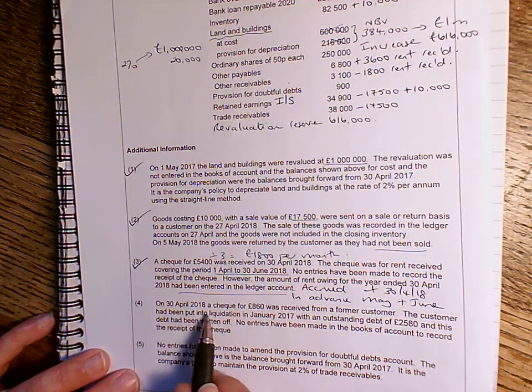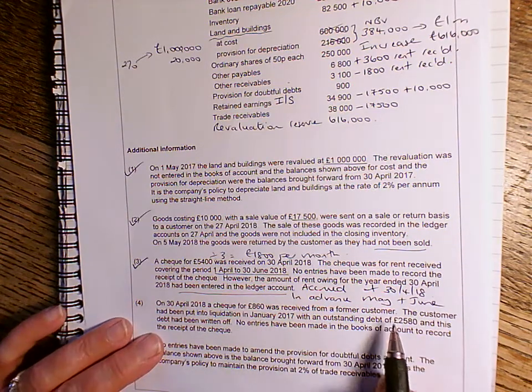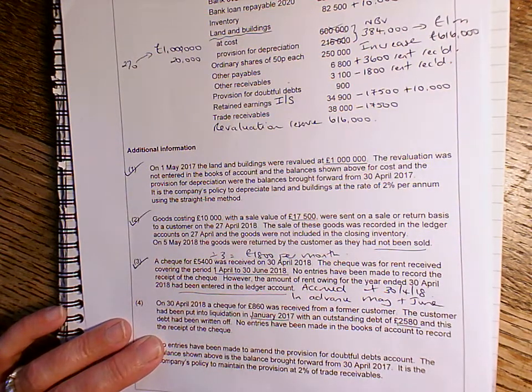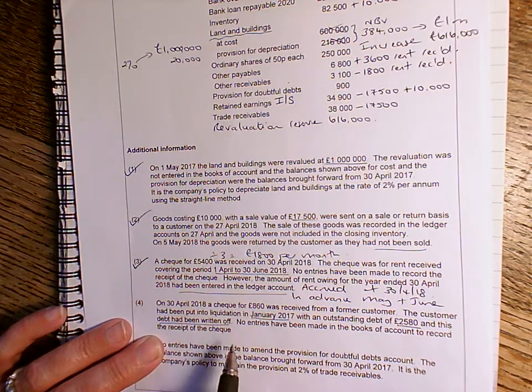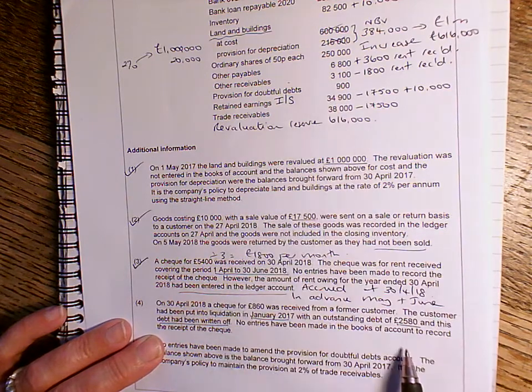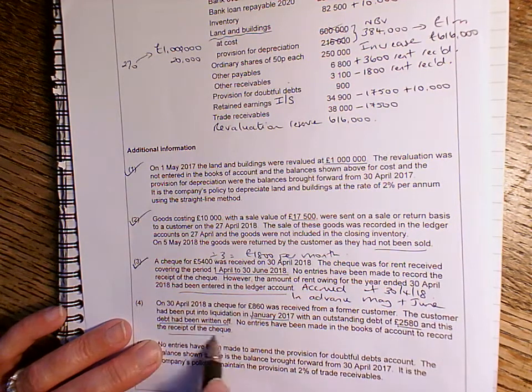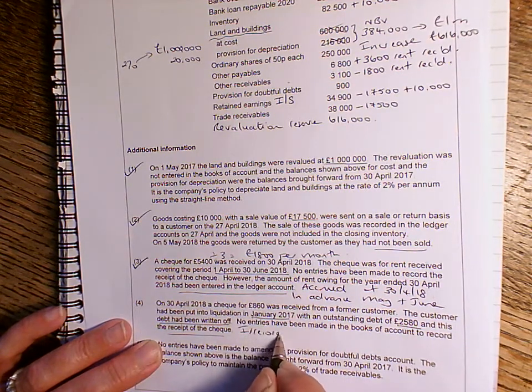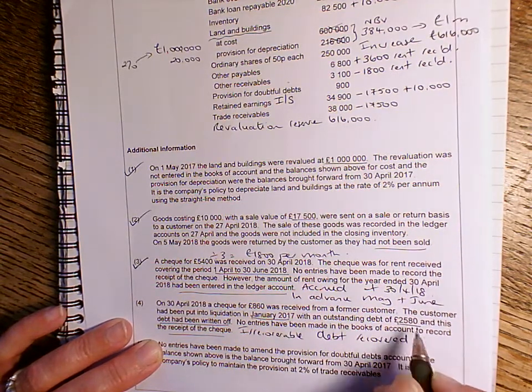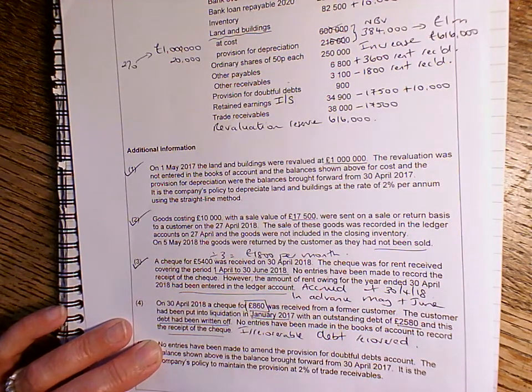Number four, on the 30th of April, a cheque for £860 was received from a former customer. The customer had been put into liquidation in January 2017 with an outstanding debt of £2,580, and that had already been written off. So that £2,580 has already been deducted when they've arrived at the retained earnings for the year. It's already been taken off of profit. But no entries have been made in the books of account to record the receipt of the cheque. So this is that irrecoverable debt recovered. So the red herring there is that £2,580. We don't need to do anything with that. But the £860 is the irrecoverable debt recovered.